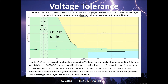During the arc flash test, 6,000 volts was applied to one phase of a 480-volt system. The test lasted for 390 milliseconds, and because of phase-back VSGR, the voltage only went to 483 volts.